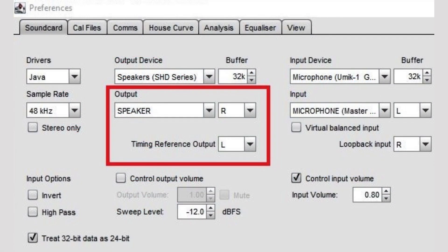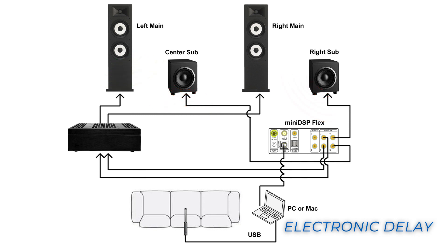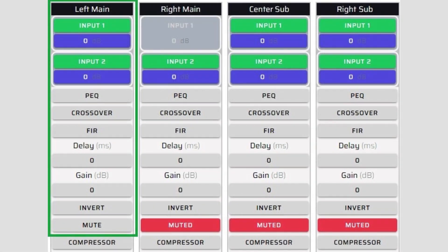On the REW preferences page, set the timing reference output to the left channel and set the speaker output, which should be the delay measurement signal, to the right channel. This corresponds to channels 1 and 2 on the device console. Before making actual delay measurements from the listening position, start out with the microphone near the acoustic timing reference output — in this case, the left main speaker. Next, make measurements of all the other speakers and subwoofers in the system that are farther from this point. With the mute and routing matrix functions of the device console, you can select which speaker or subwoofer is being measured for delay.